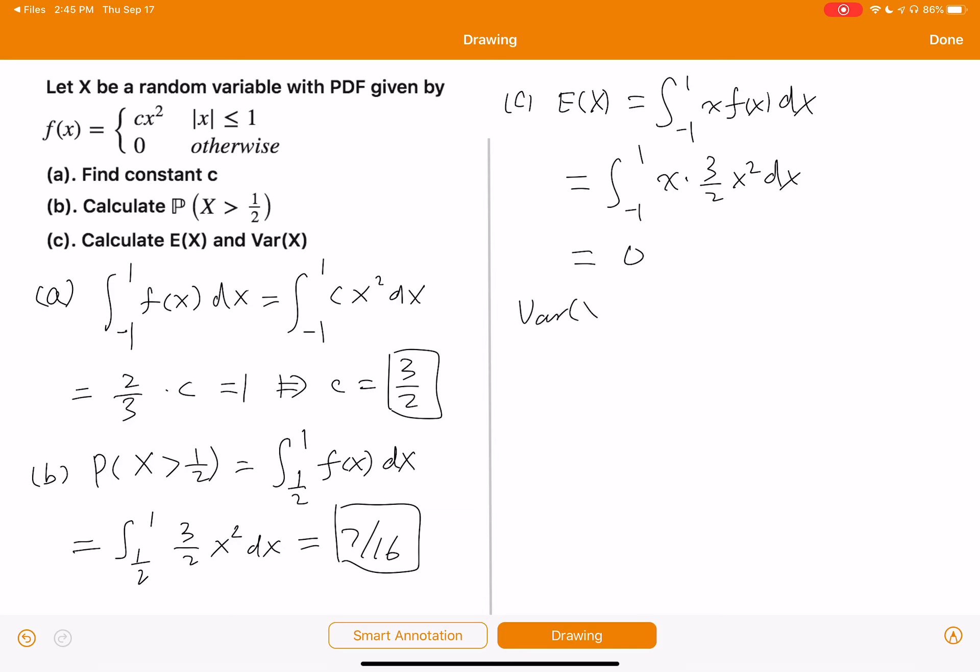The variance of X is equal to E(X squared) subtract E(X) squared. And E(X squared) is equal to negative one to positive one x squared times f(x) dx. And E(X), we just calculated, is 0. So this is equal to negative one to positive one x squared f(x), which is 3 over 2 x squared dx. And this is equal to 3 over 5.